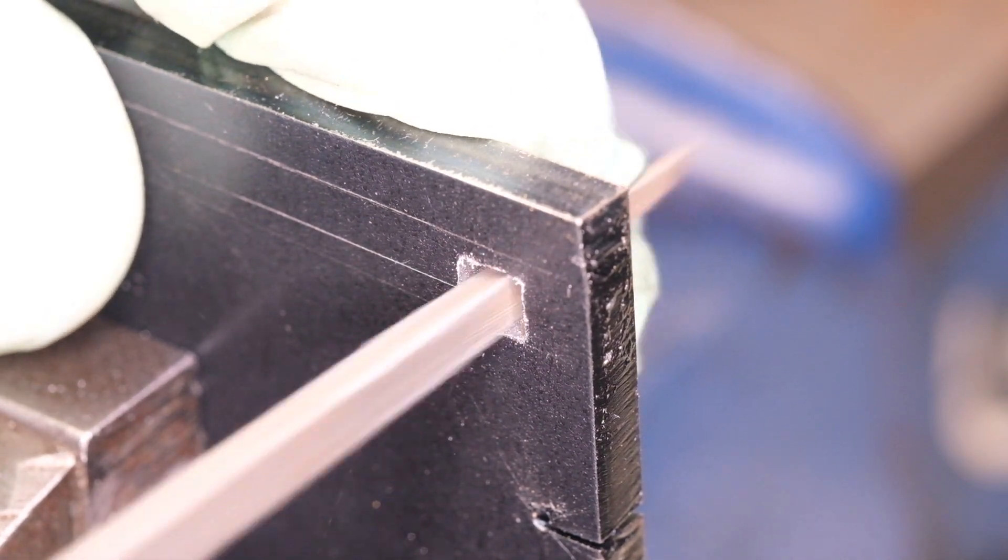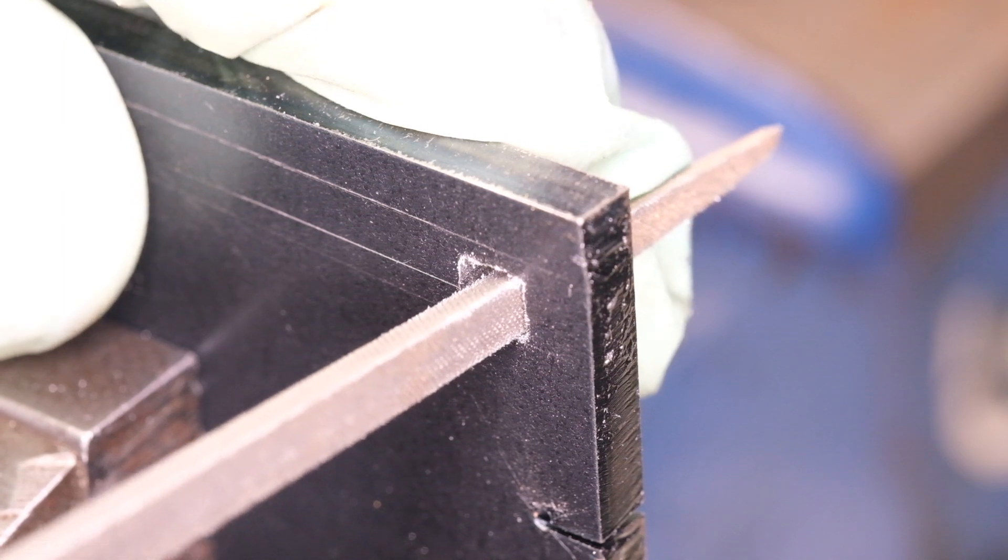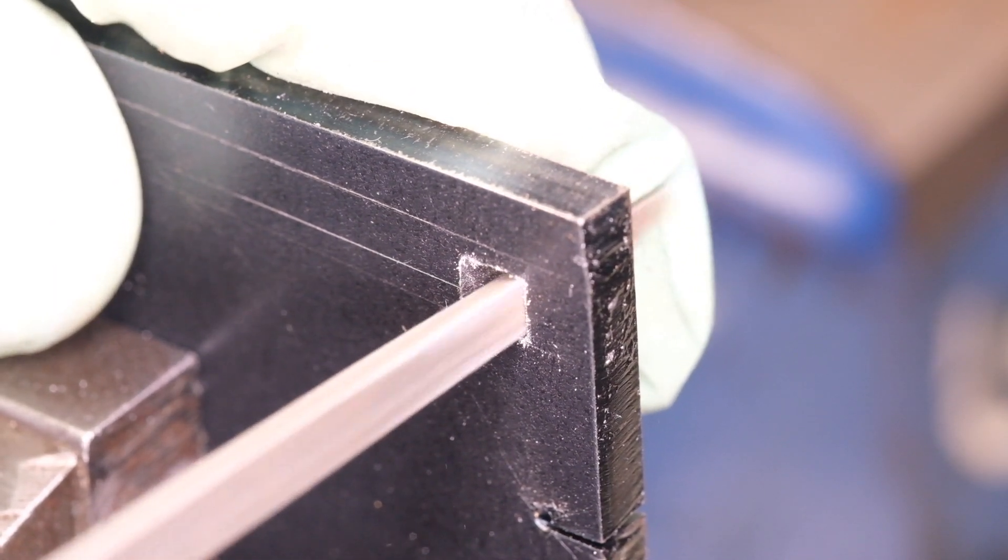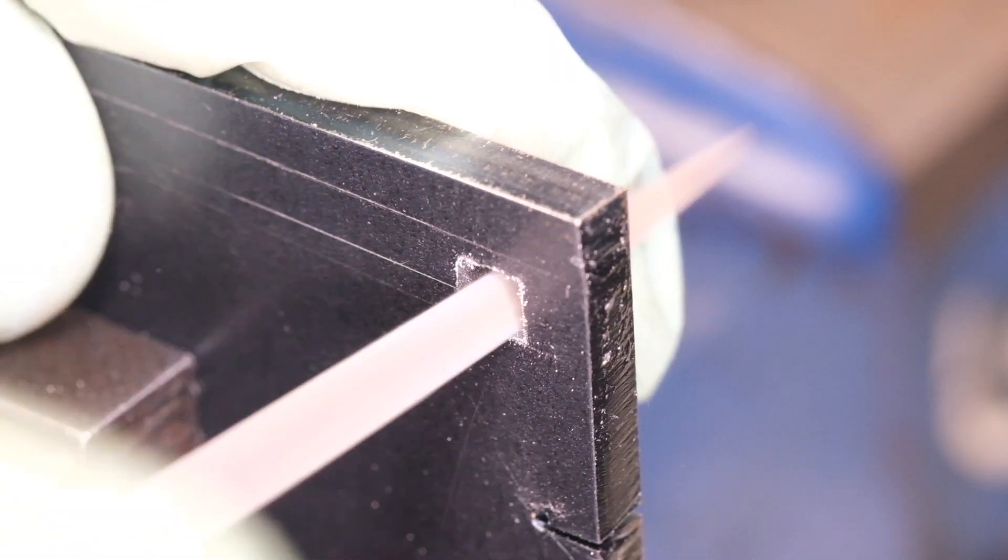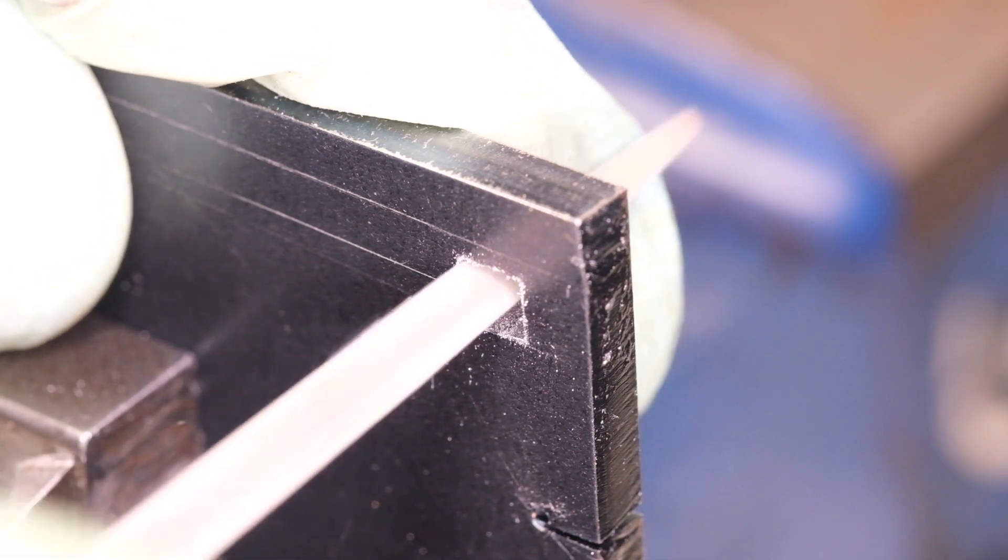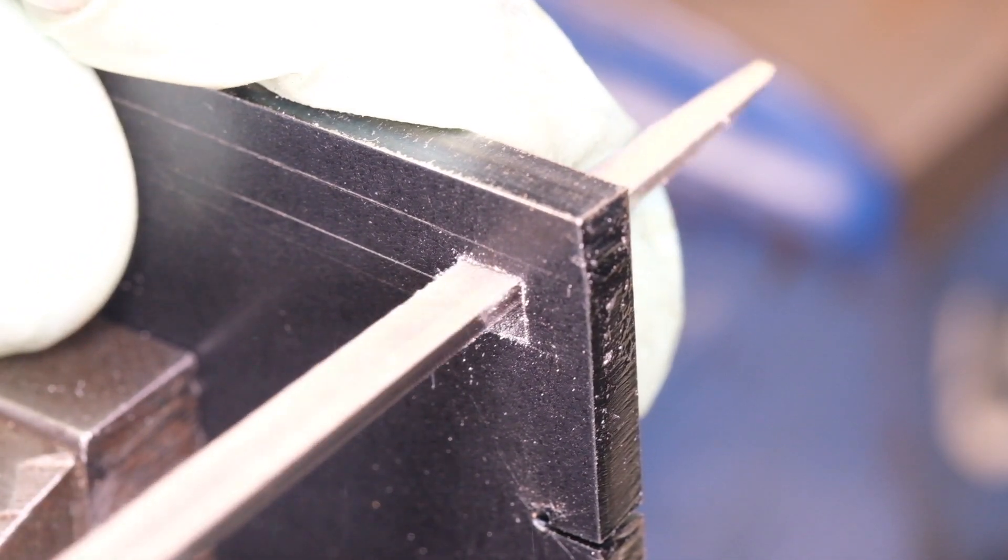So I use a square file to rough out slightly undersized. Then I use a three-square file, so a triangular file, with one set of teeth or one face ground completely smooth. It has no teeth on one side.